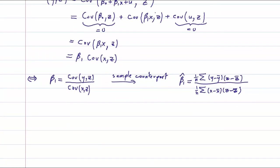So we know that the top part here, so let's take the plim of beta one hat. The top part converges to the covariance of y and z, and the bottom part converges to the covariance between x and z.